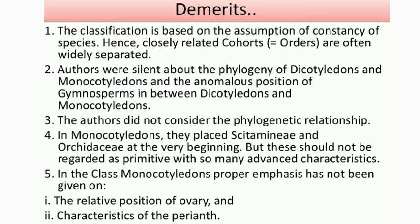First demerit: this classification is based on the assumption of constancy of species. Hence, closely related cohorts or orders are often widely separated. They thought species number and diversity would always remain constant, but after natural modifications some closely related species became widely separated.